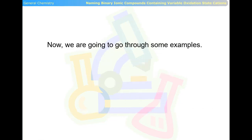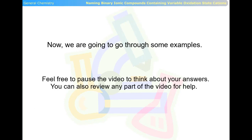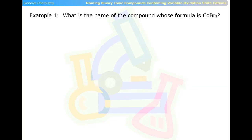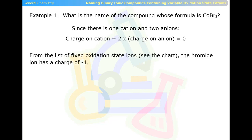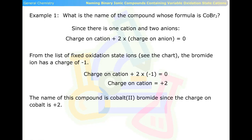Now we are going to go through some examples. Feel free to pause the video to think about your answers. You can also review any part of the video for help. Example one: What is the name of the compound whose formula is CoBr2? Since there is one cation and two anions, the charge on the cation plus two times the charge on the anion equals zero. The bromide ion has a charge of negative one, so the charge on the cation equals positive two. The name of this compound is cobalt(II) bromide.